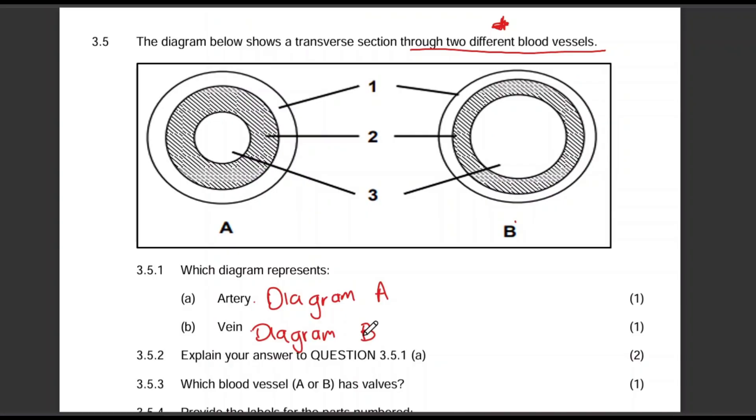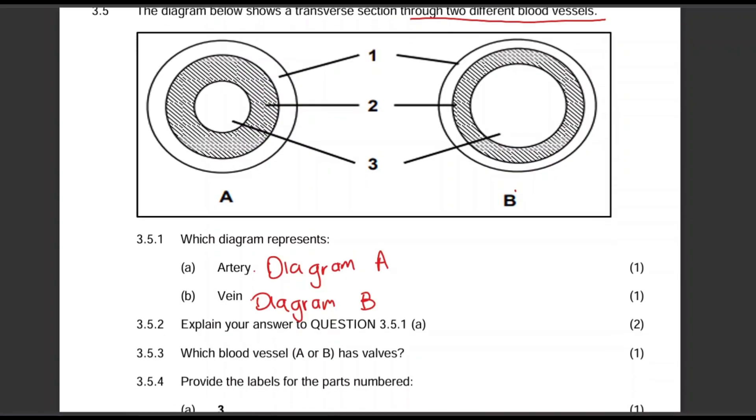I assume they're definitely going to ask us to provide reasons for this. Let's look at the second question. Explain your answer. Why are you saying diagram A is the artery and diagram B is the vein? There's two giveaways here. The lumen. So this is the space where blood will pass through. This is the lumen here. This is the lumen and this is the lumen, right?